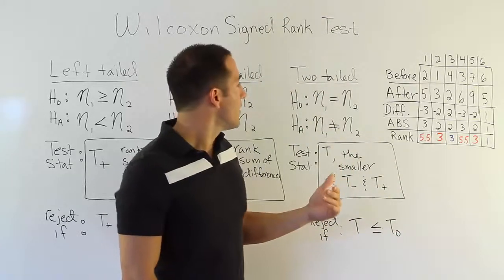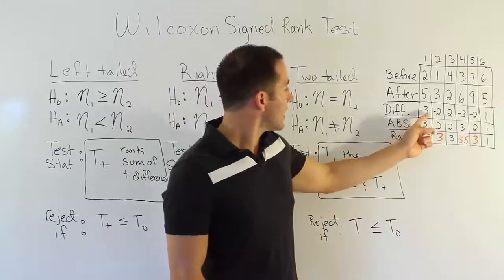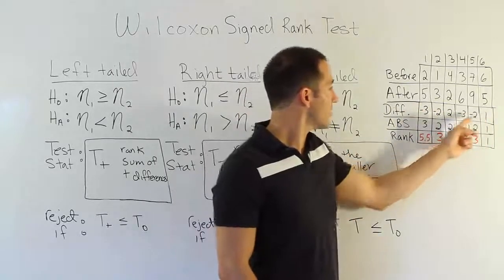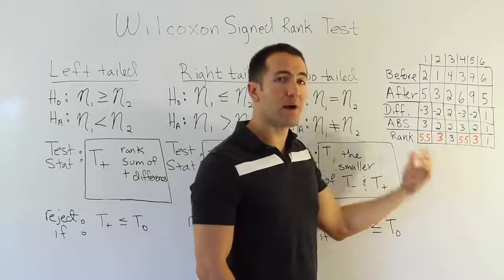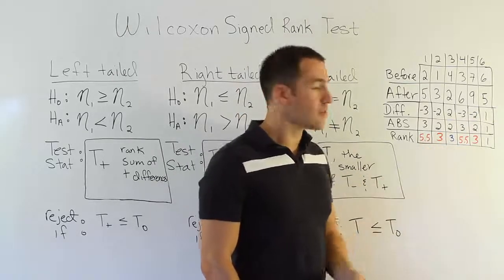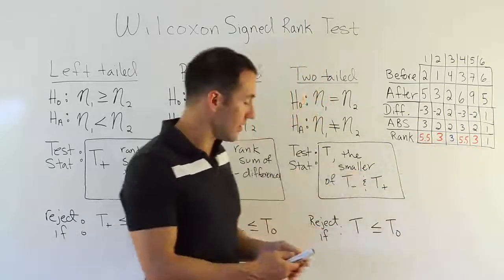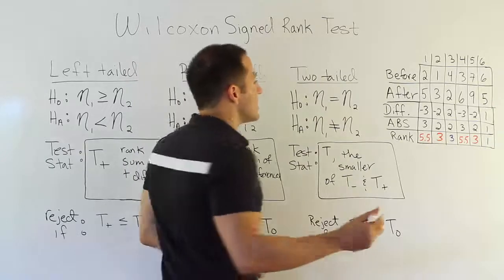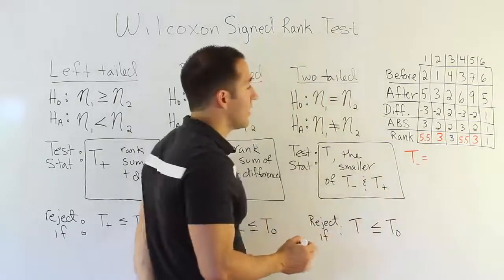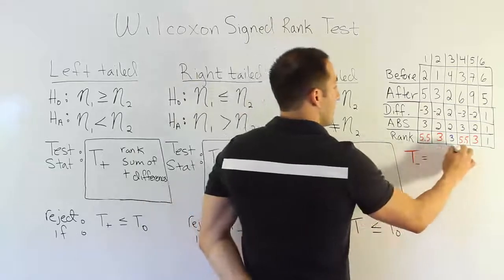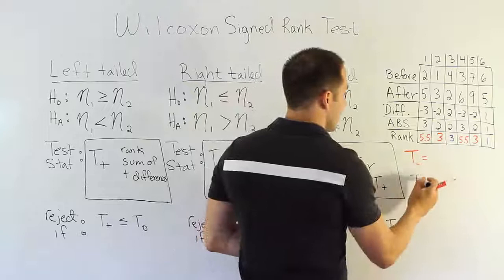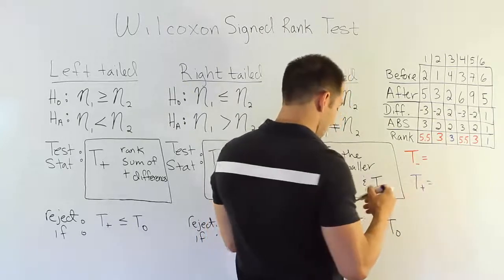What you want to do is keep track of which ranks belong to positive differences and which ranks belong to negative differences. All the differences that had negatives go to the negative side, and all the ones that had positive numbers go to the positive total. So we're going to have two separate rank totals, shown here in different colors. T negative is the total for the negative ranks, and T positive is the total for the positive values.